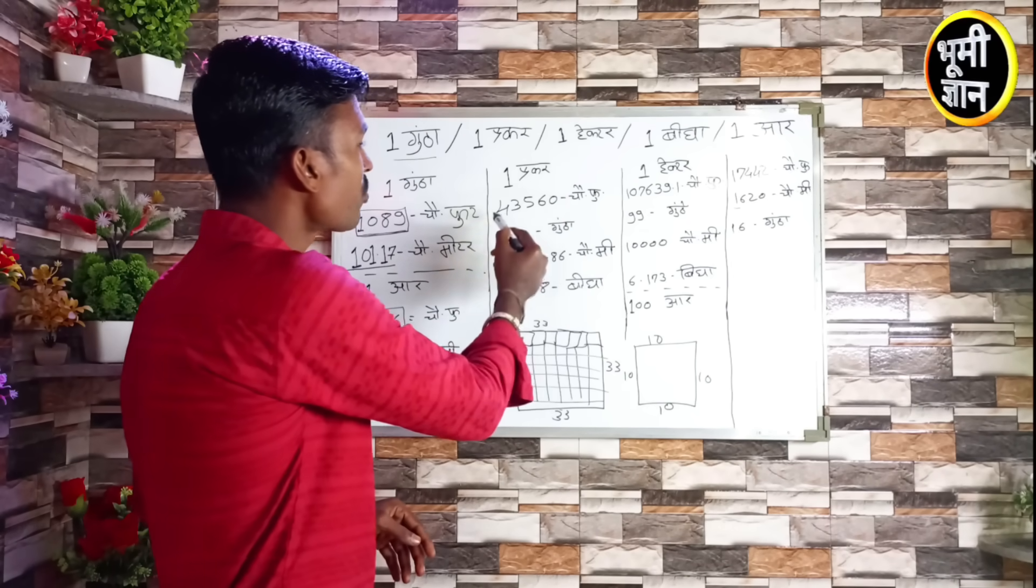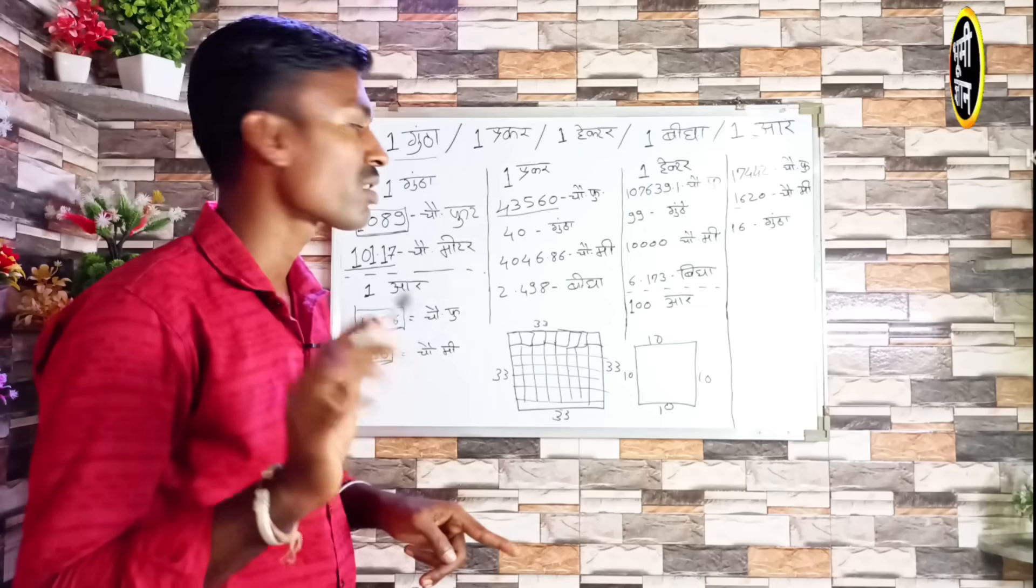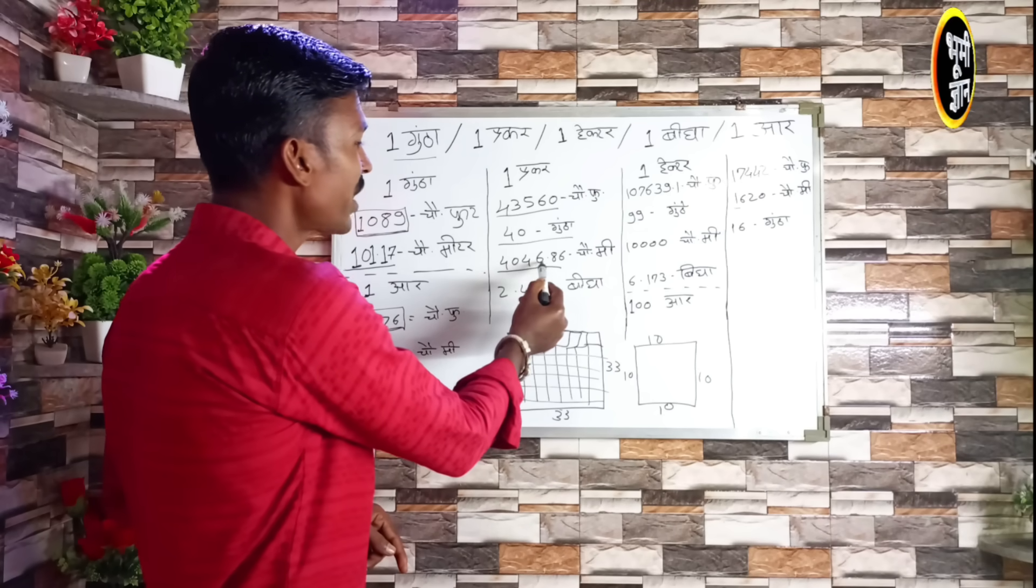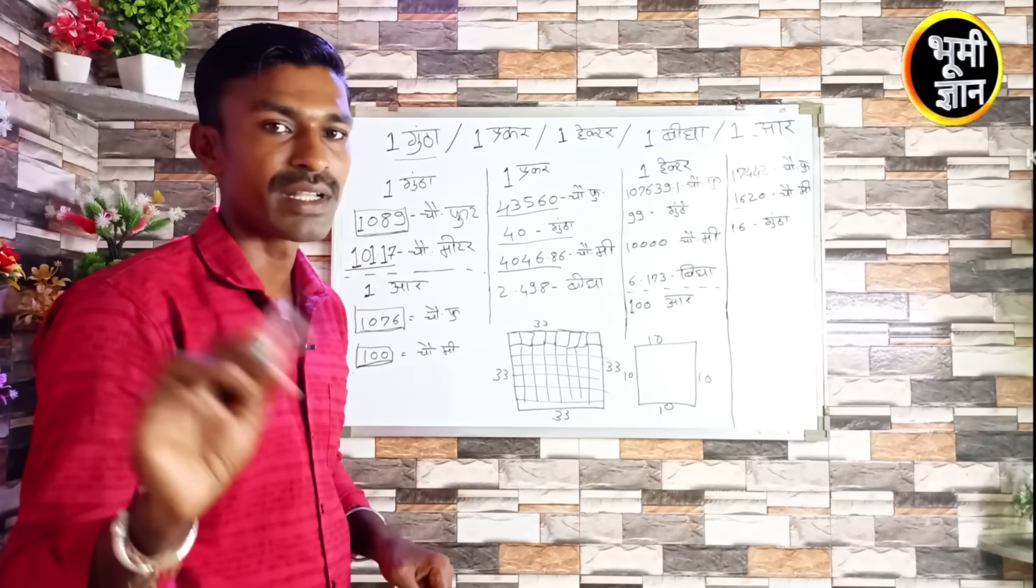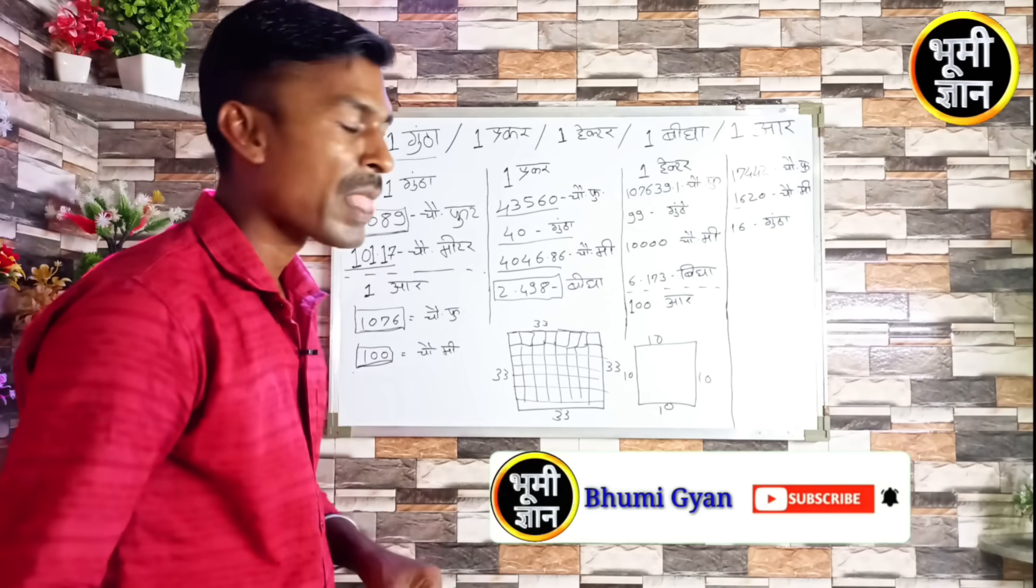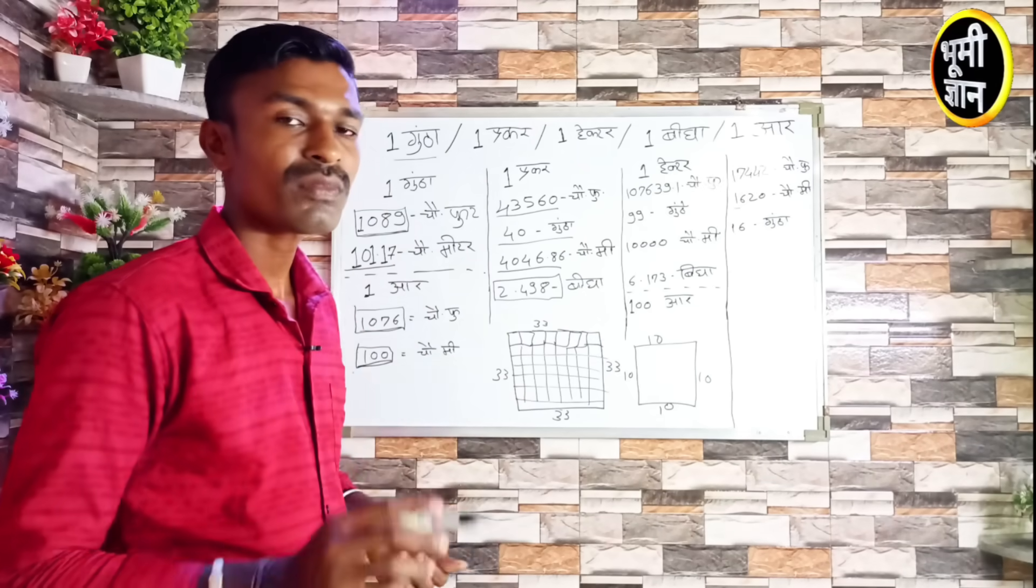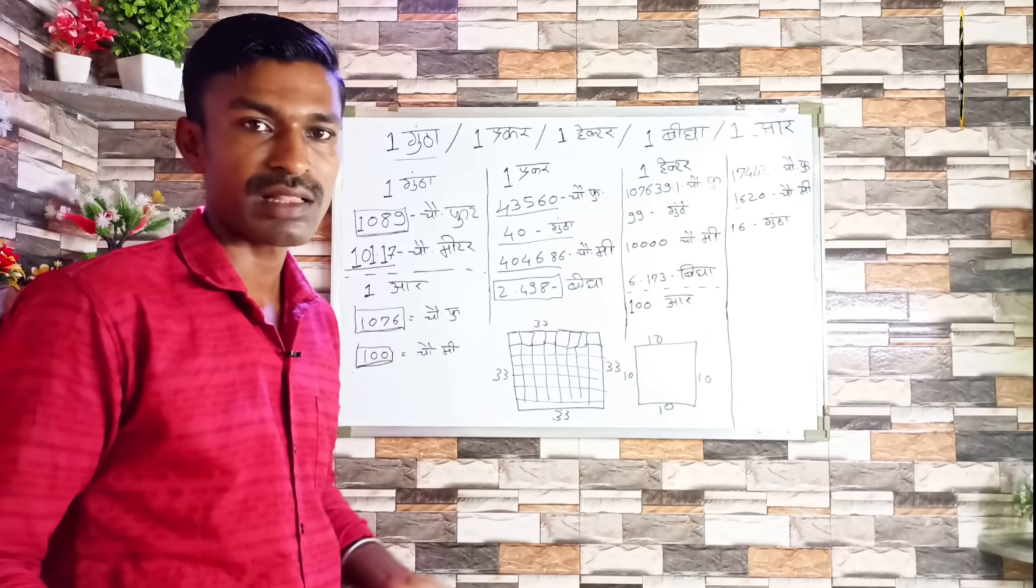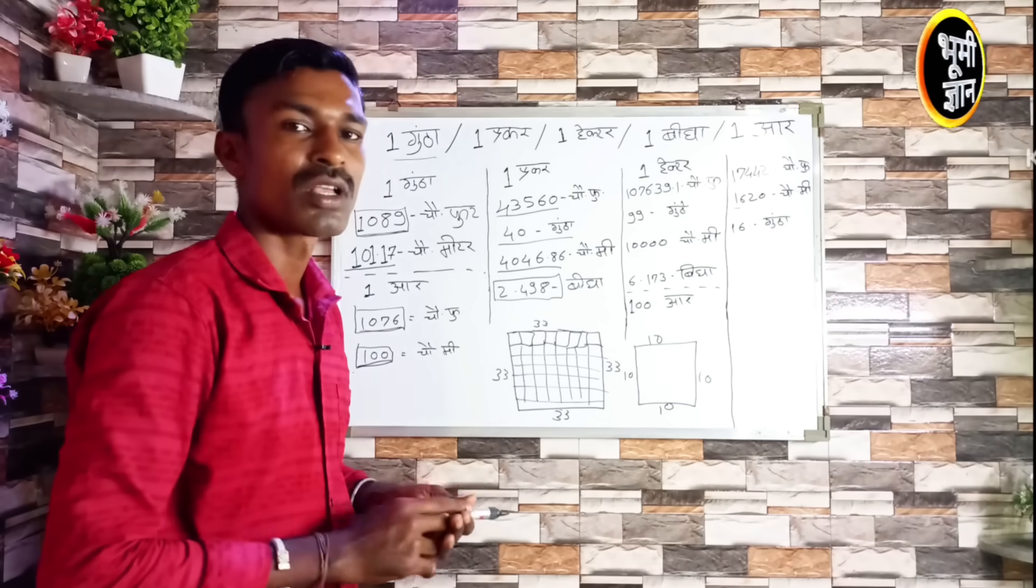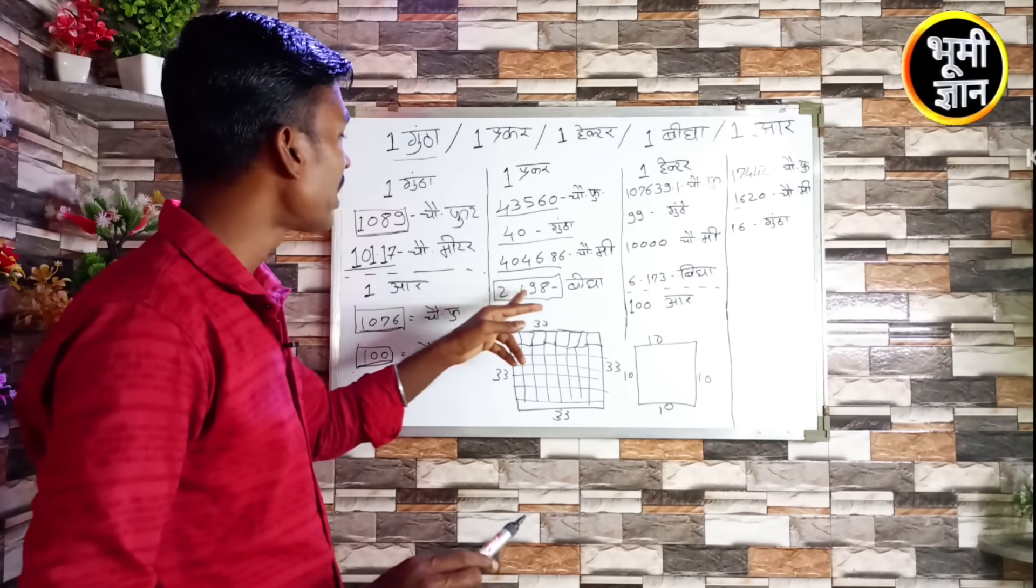So we have to understand the acre measurement. If you have 1 acre, it will be 43,560 square feet, it will be 1 acre and it will be 4,046 square meters. It is a big measurement. The measurement is growing. It is a big one. So 2.471 acres equals 1 hectare. So it is a conversion. It is important to understand this conversion. I have to explain 1 acre.